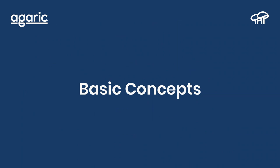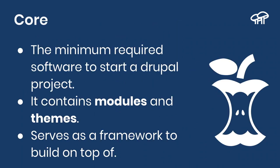Let's have a look at some basic concepts. What is Drupal Core? Drupal Core is the minimum required software to start a Drupal project. If you don't have Drupal Core, it is not Drupal — it could be WordPress, Django, Rails, or something else. Drupal Core contains modules and themes, and it sets the foundation — the base framework — on which you can build.